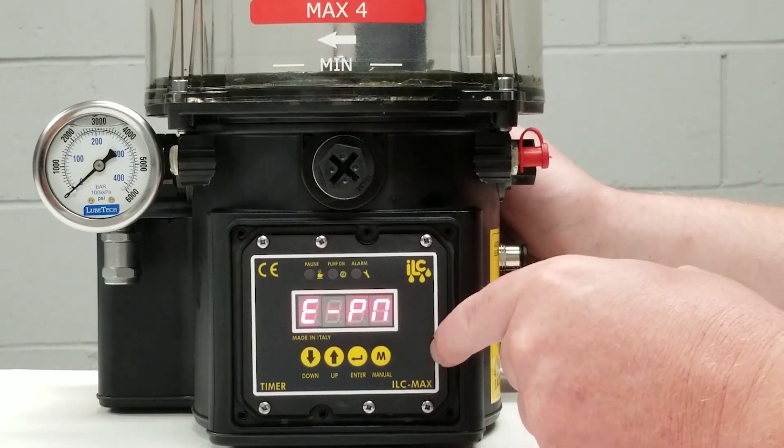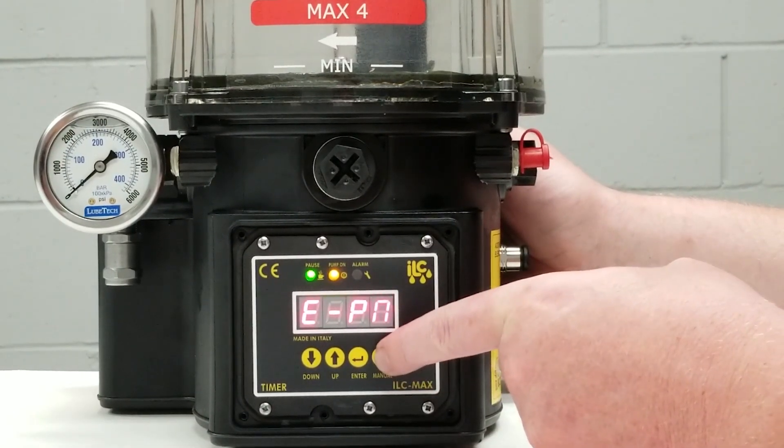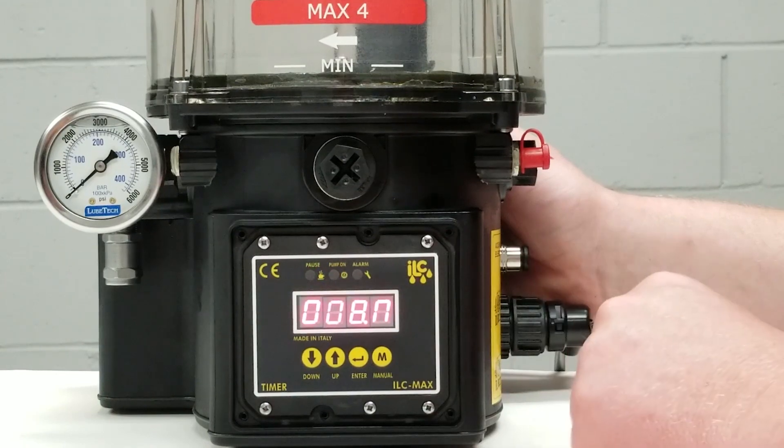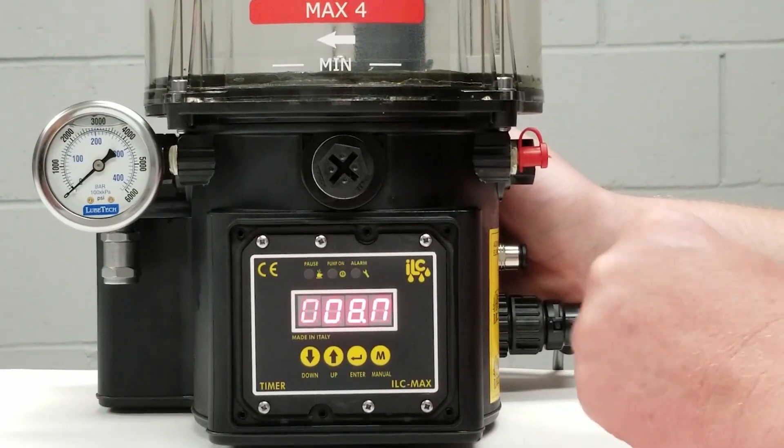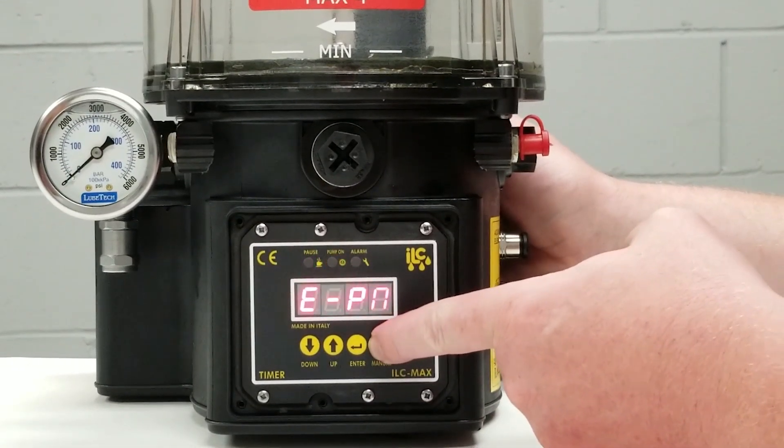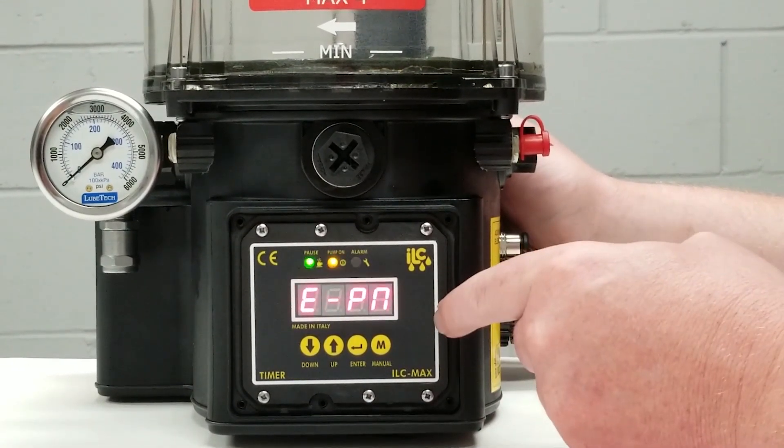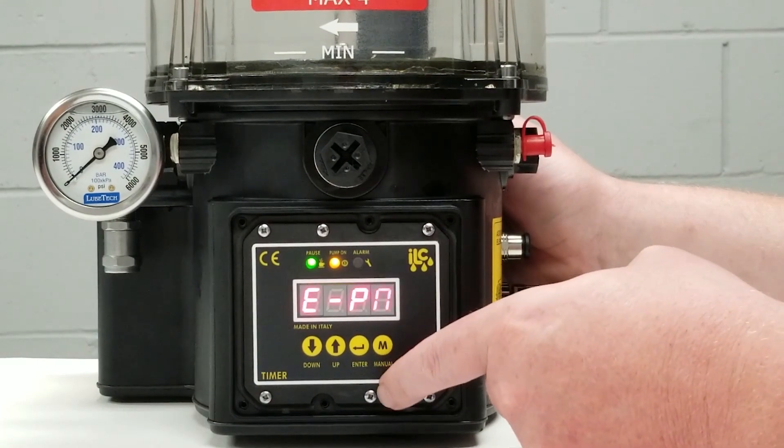E-PN is your pause time in minutes. To enter and see what this value is set at, we're going to press the M button and currently my delay time is set at eight minutes. I'm okay with that. I'll press the M button to bring me back out to the programming menu and we will continue on.